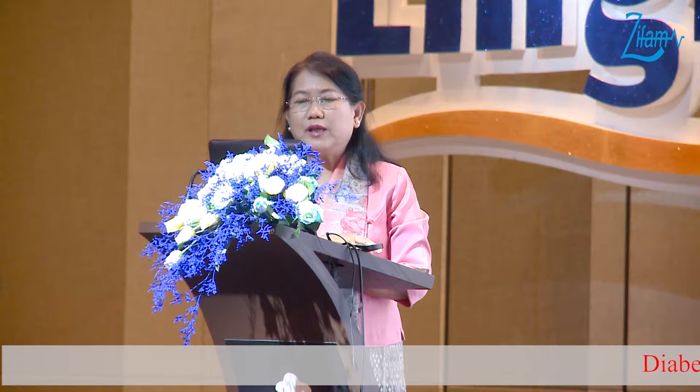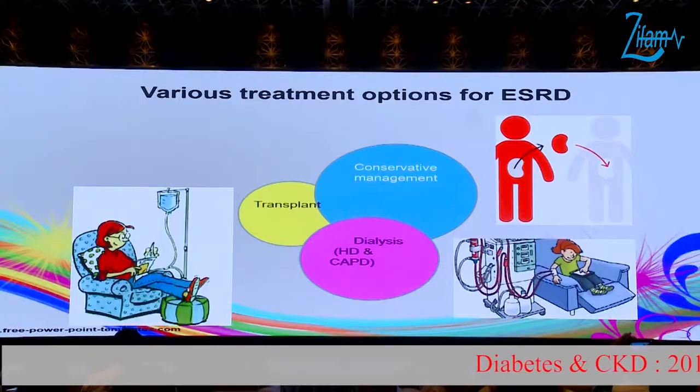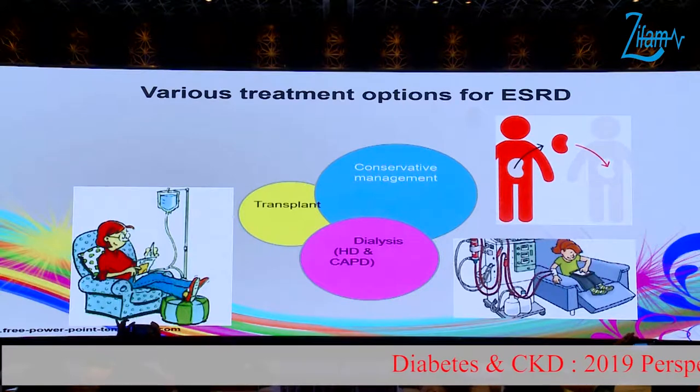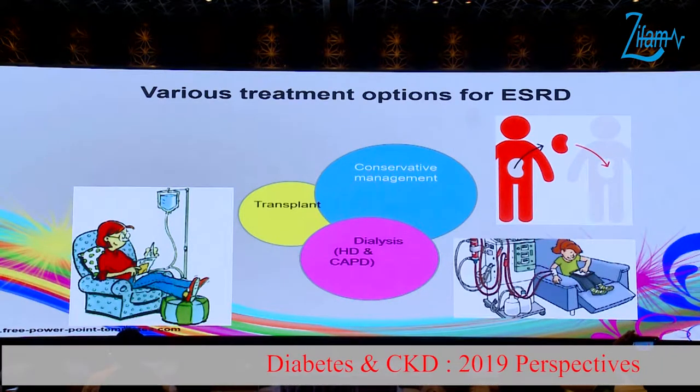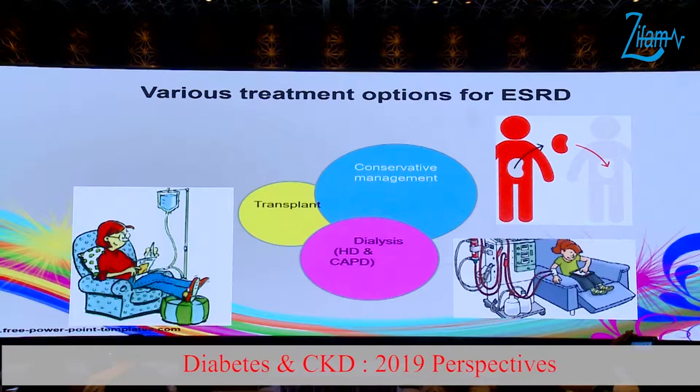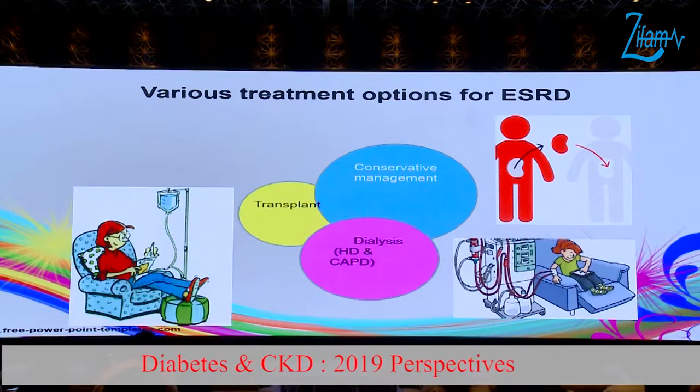When patients reach end-stage renal disease, CKD stage 5, what treatment options can we offer in our country? There are various treatment options: we can support with hemodialysis, chronic ambulatory peritoneal dialysis, and kidney transplant.